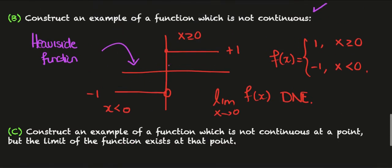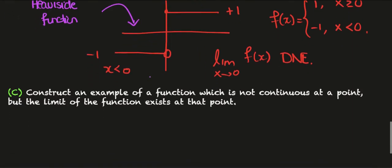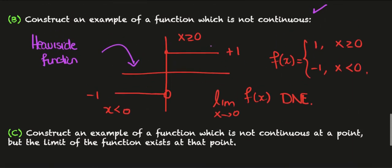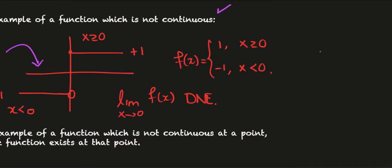Here the example we constructed with the Heaviside function is not continuous because the limit doesn't exist and this is the example, this type of example is what most students fall back on when they want to construct an example of a function which is not continuous.